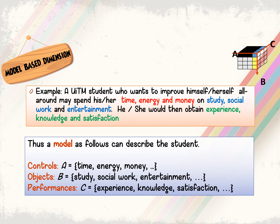One example of a verbal description: a student wants to improve themselves overall and spends time, energy, and money on study, social work, and entertainment. They then obtain experience, knowledge, and satisfaction. From this description, we can build a model. The controls are time, energy, and money; the objects are study, social work, and entertainment; and the performance outcomes are experience, knowledge, and satisfaction. If you put more time into studying, you will gain more experience.